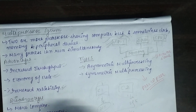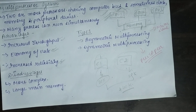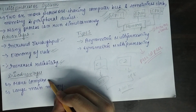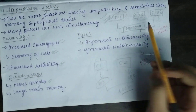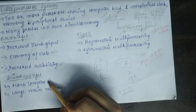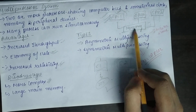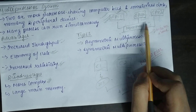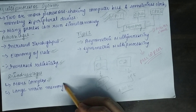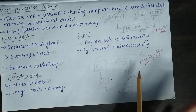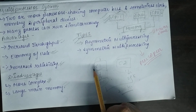The disadvantages of multi-processor systems are that the system is more complex, since you have multiple processors that need to be connected and must communicate with each other. Additionally, since multiple processors communicate with memory, you need a larger main memory.